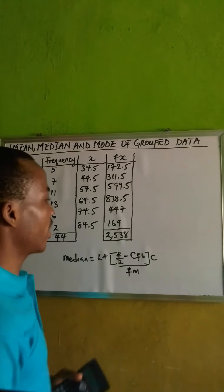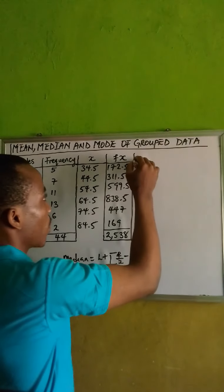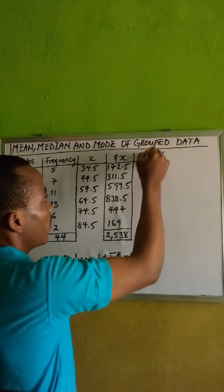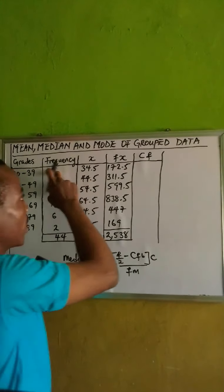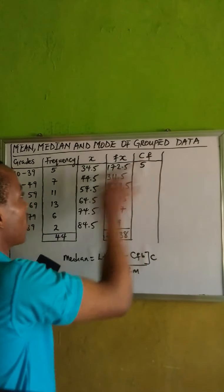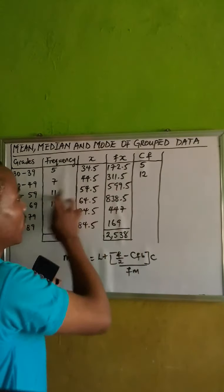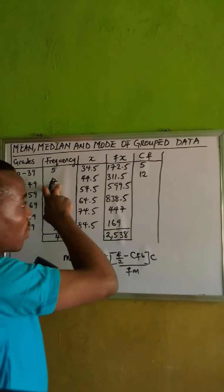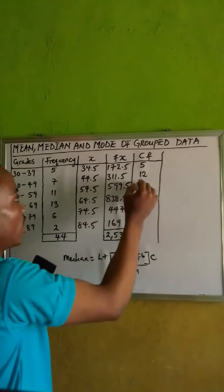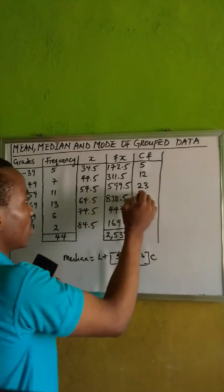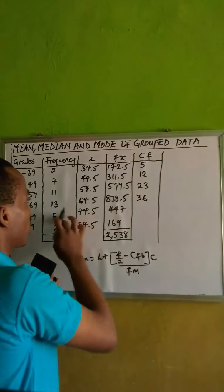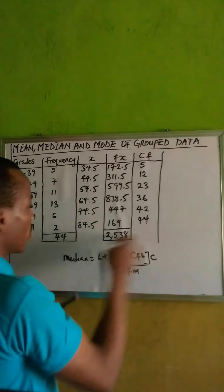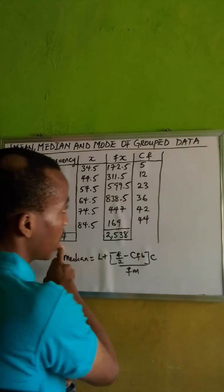So how do we get these values? First, let's work out the cumulative frequency. The cumulative frequency is built by taking the first frequency value — that's 5 — then adding each subsequent frequency: 5 plus 7 is 12, 12 plus 11 is 23, 23 plus 13 gives 36, 36 plus 6 gives 42, and 42 plus 2 gives 44. What you end up with must correspond with the total of your frequency — otherwise you've made a mistake.